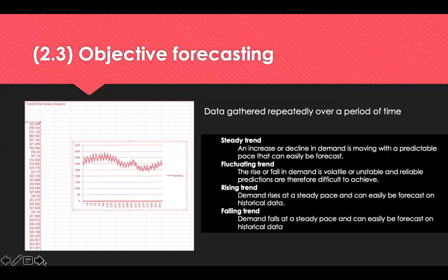Objective forecasting approaches are quantitative in nature and lend themselves well to an abundance of data. The approach can identify trends from the data. Causal or econometric forecasting methods attempt to predict outcomes based on changes in factors known or believed to impact those outcomes — for example, temperatures may be used to forecast ice cream sales, advertising expenditure to predict sales, or the unemployment rate to forecast the incidence of crime. Data gathered repeatedly over time will reveal a trend: steady (not changing), fluctuating (volatile), rising (steady pace going up), or falling (steady pace going down).